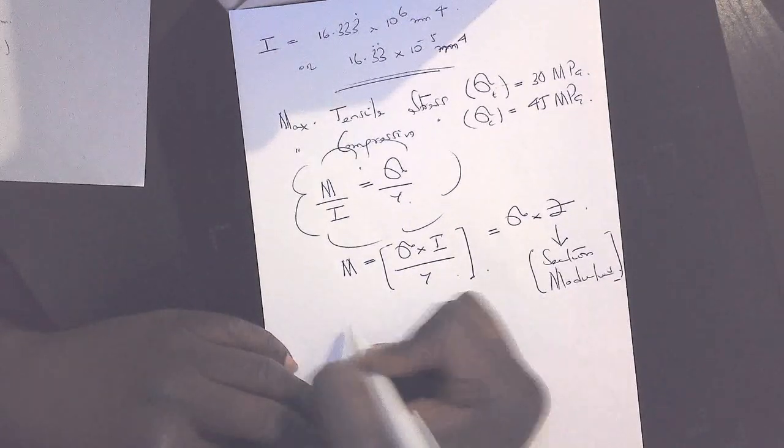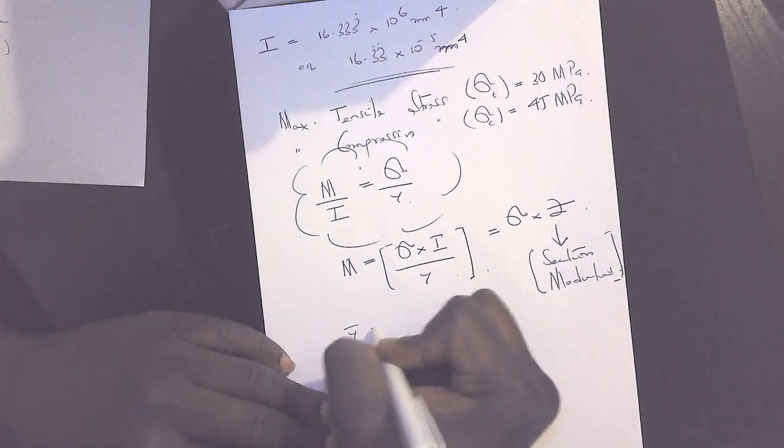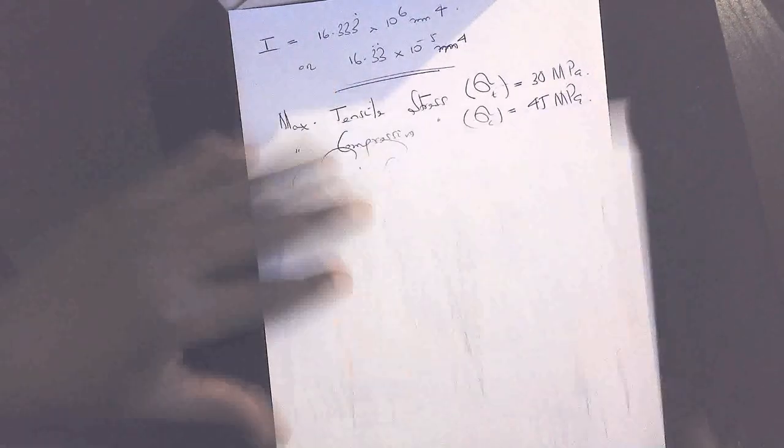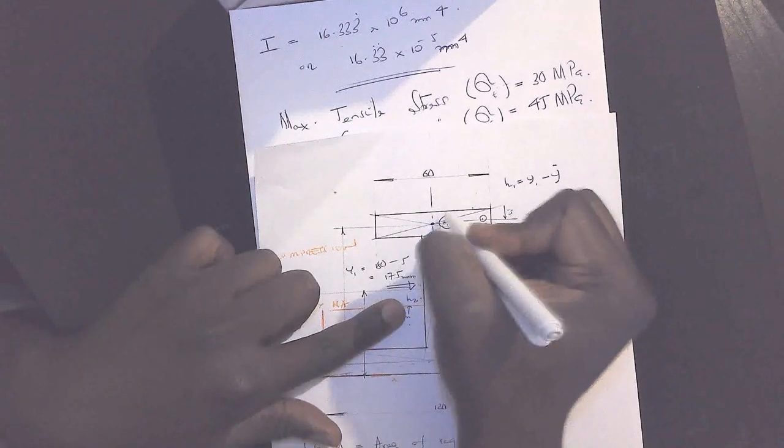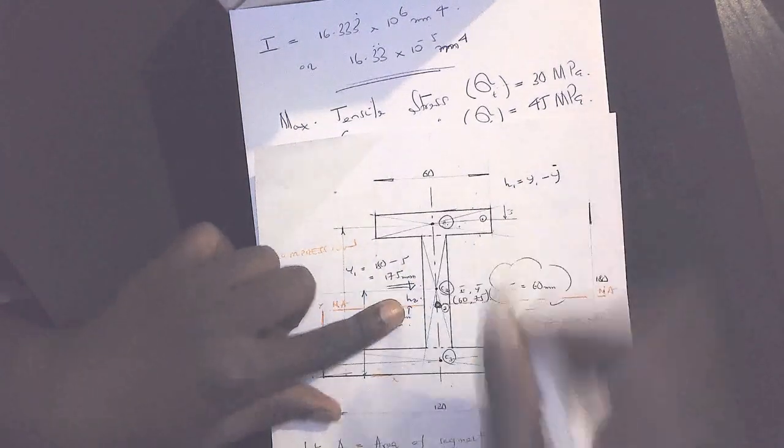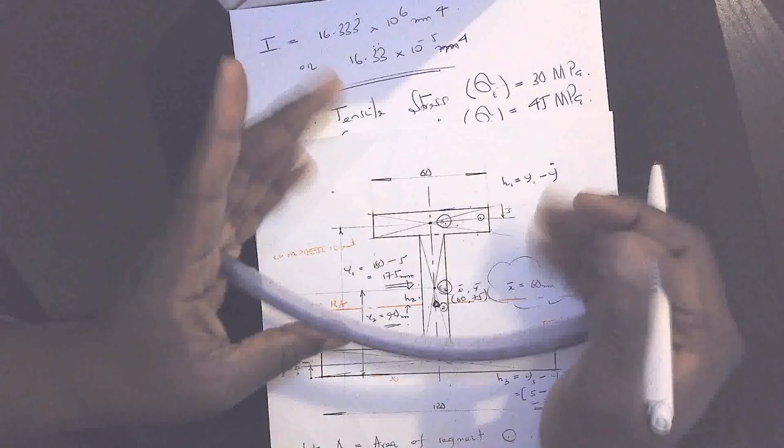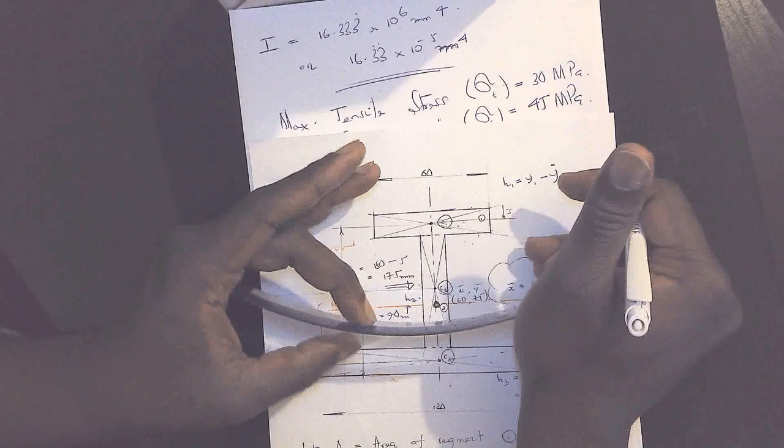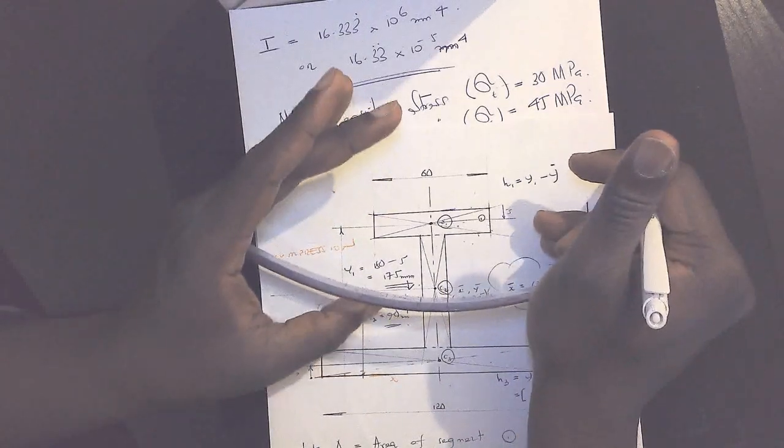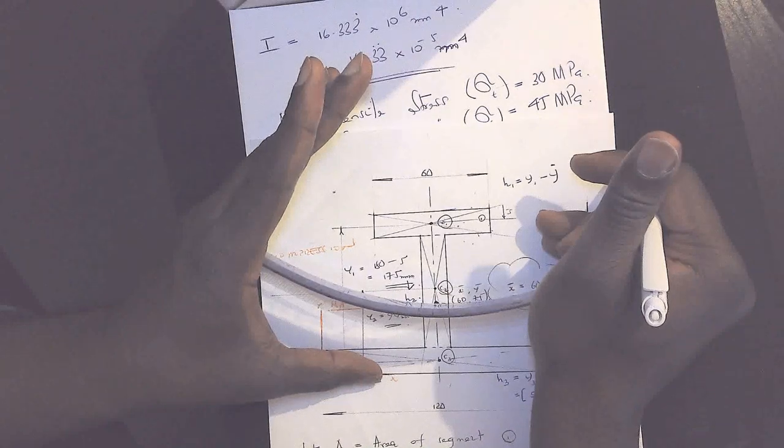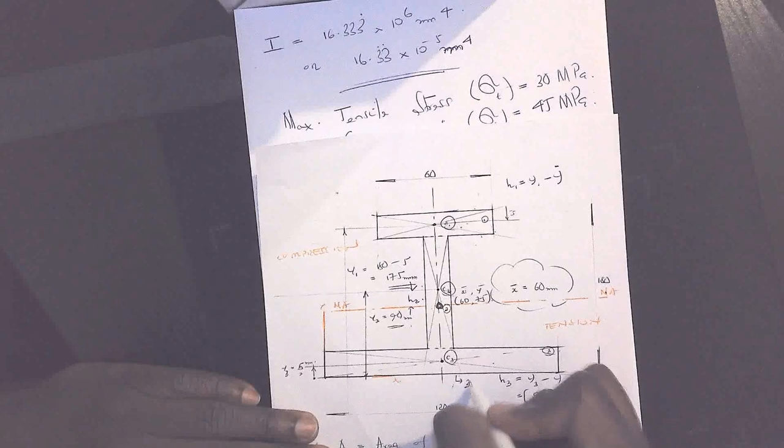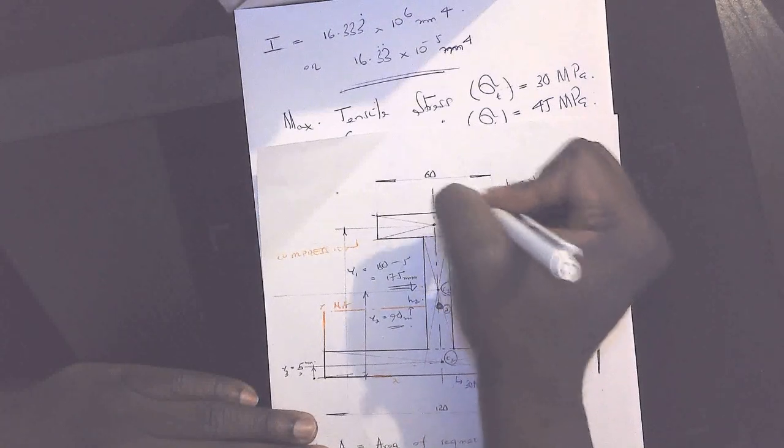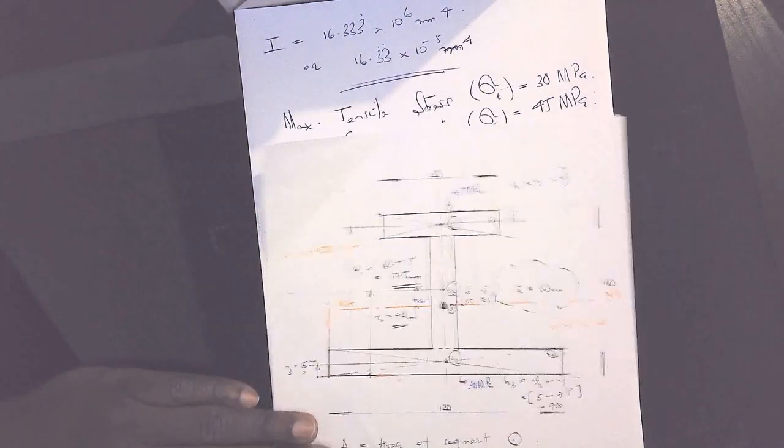So what is Y? Y is equal to, let's call this Y max. Y max will be equal to the distance from the neutral axis to the outermost surface of the beam. Since the beam is in the state of sag, then the upper portion is in the state of compression, which means that the bottom part from the neutral axis to the outermost surface of section three will be in tension.